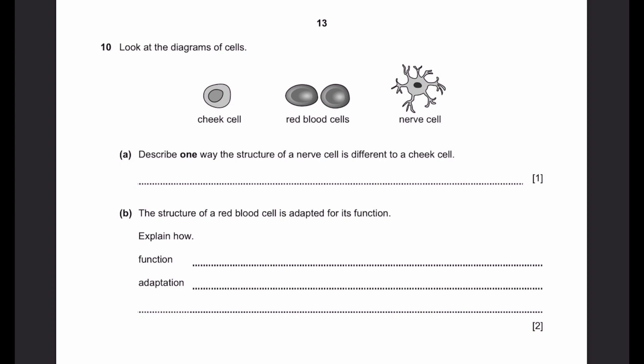Question 10. Look at the diagrams of cells. Part A. Describe one way the structure of a nerve cell is different to a cheek cell. This means that nerve cell has connections with other cells. That's the answer.